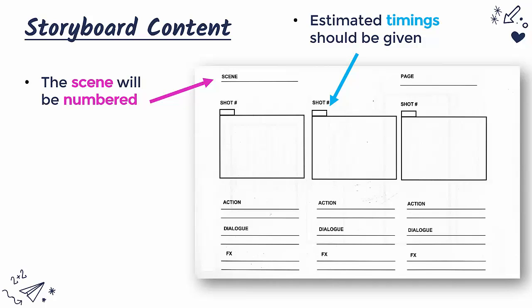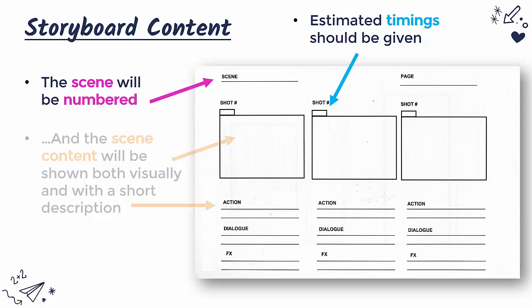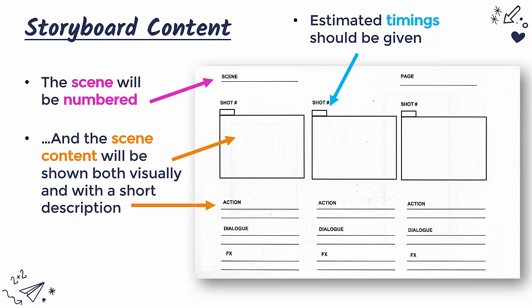It's important to give estimated timings for how long you expect each scene to take — that helps your director and editor. You might also have a limited length, such as only 30 seconds for an advert, so timings are quite important for planning. Not only will you show the actual scene content as a sketch in the box, but it's also important to write a quick description, because sometimes your sketch might not be incredibly clear and writing what's happening exactly is useful.